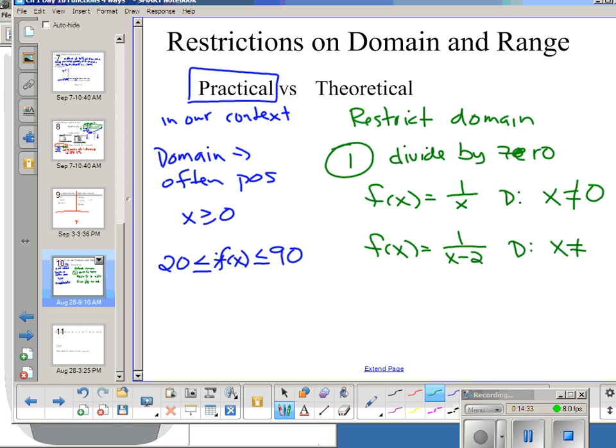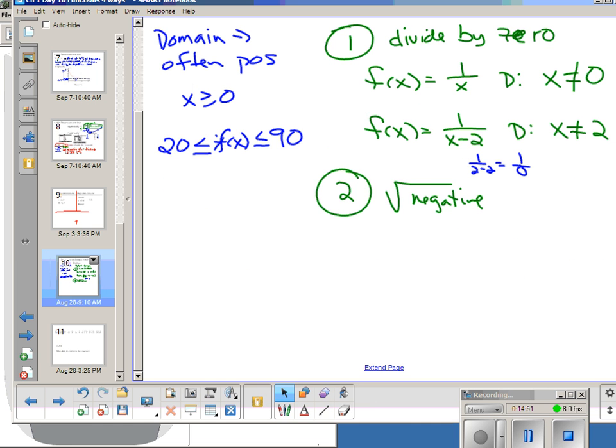Or if I do f of x is 1 over x minus 2, my domain becomes x cannot equal 2. Putting 2 in for x right here would make me divide by zero. So, the other big problem and restriction is taking the square root of a negative number. So, for example, if I take the square root of x minus 2, if I put in 2 or 3 or 2.5, that's fine. As soon as I put in a number lower than 2, I am going to take, say, for example, 1, square root of a negative 1. So, my domain becomes x is greater than or equal to 2, and that's our theoretical restrictions.